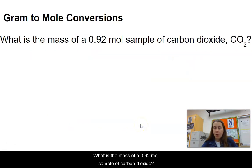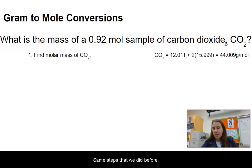What is the mass of a 0.92 mole sample of carbon dioxide? Again, same steps that we did before. Find the molar mass using your periodic table. So this is the mass of one carbon plus two oxygens to get 44.009 grams per mole.